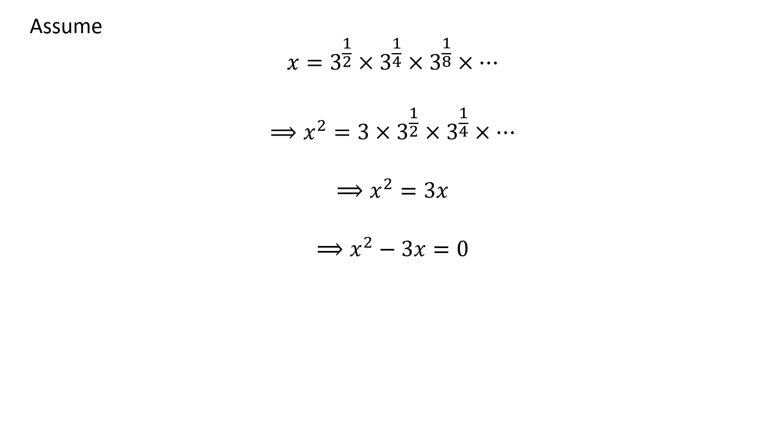Subtracting 3x from both sides of the above equation, we get x squared minus 3x is equal to 0.